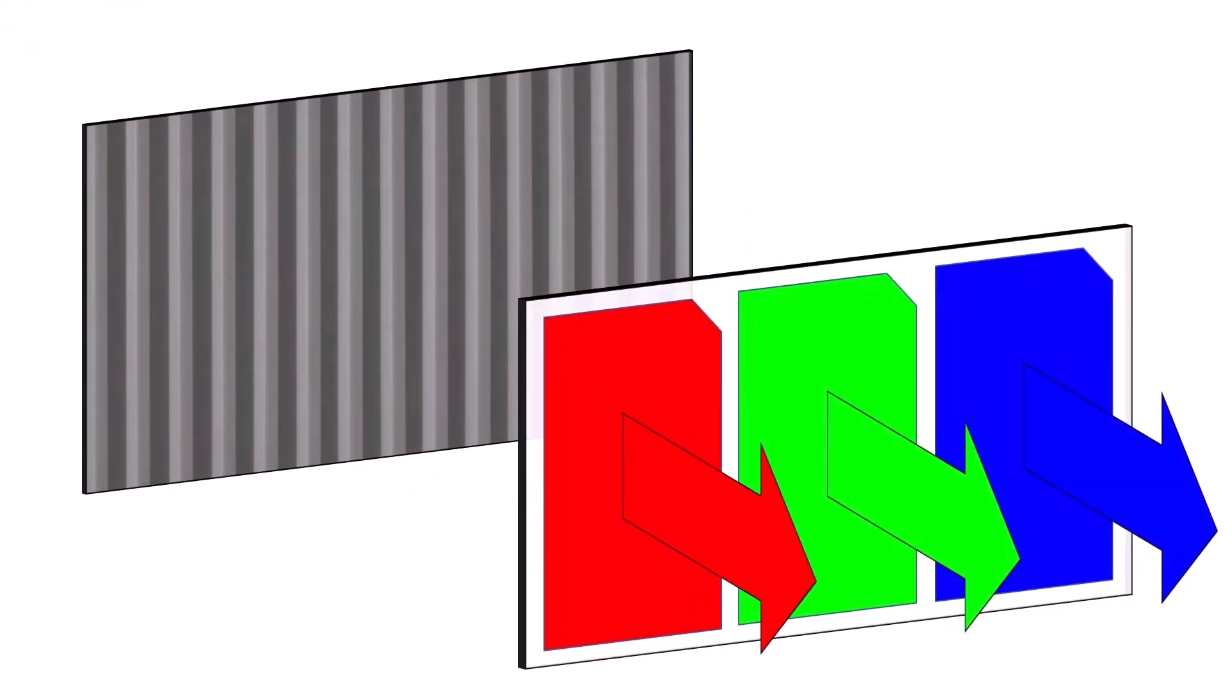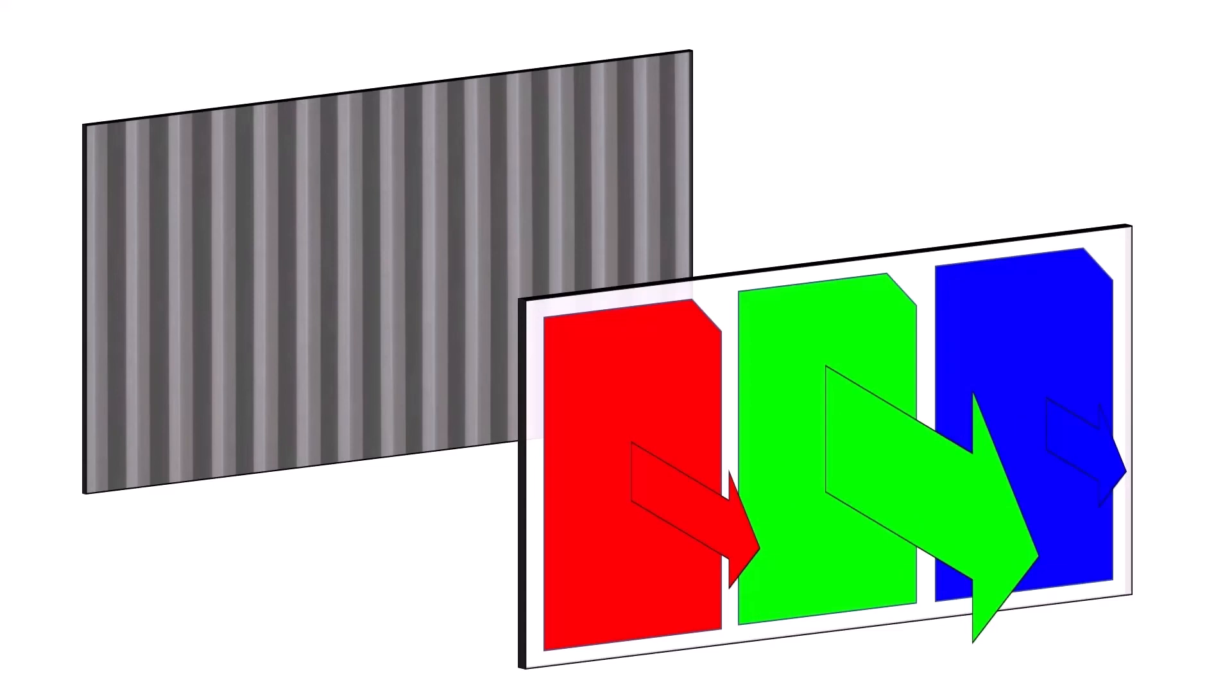And by changing the amount of light that gets polarized, we can control the brightness of each individual subpixel. Awesome! Now we understand the mechanics of each pixel.